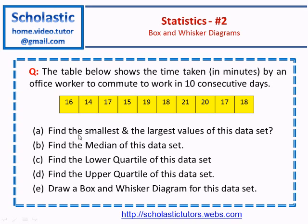Part A: find the smallest and the largest values of this data set. Part B: find the median of this data set. Part C: find the lower quartile of this data set. Part D: find the upper quartile of this data set. And finally, Part E: draw a box and whisker diagram for this data set.